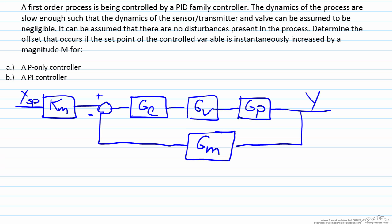The dynamics of the process are slow enough that the dynamics of the sensor transmitter and the valve can be assumed to be negligible. It can be assumed there are no disturbances present in the process, hence why there's no disturbance value seen in our block diagram.